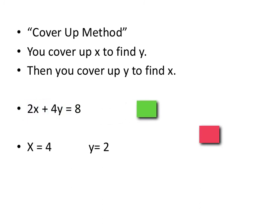Now we will cover up y to find x. So we cover up y, leaving 2x equals 8. So 2 times 4 equals 8, so our x intercept is 4. Now we would still graph our x and y intercept to make the graph of the line.